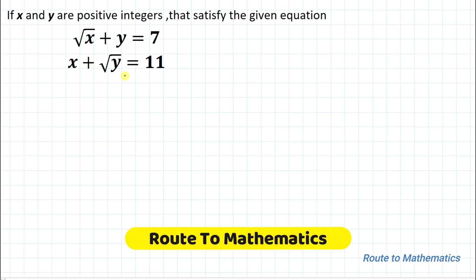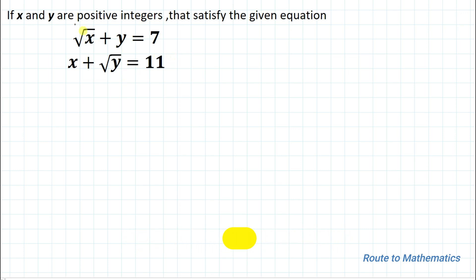Hello everyone, welcome to Root 2 Mathematics. In this video we're going to solve an interesting question. If x and y are positive integers that satisfy the equations: √x + y = 7 and x + √y = 11, we are asked to find the values of x and y.